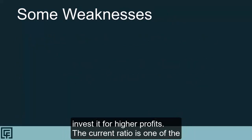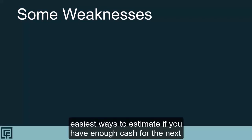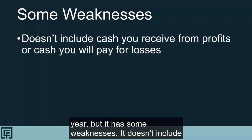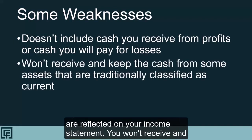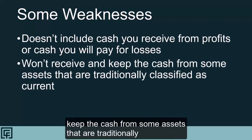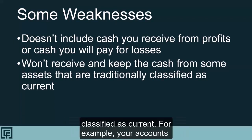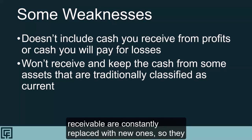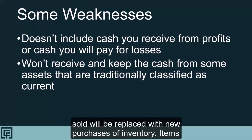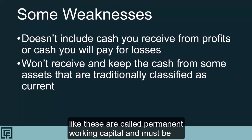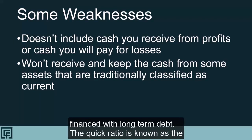The current ratio is one of the easiest ways to estimate if you have enough cash for the next year, but it has some weaknesses. It doesn't include cash you receive from profits or cash you will pay for losses reflected on your income statement. You won't receive and keep the cash from some assets that are traditionally classified as current. For example, your accounts receivable are constantly replaced with new ones, so they don't provide as much cash as you may think. Similarly, inventory sold will be replaced with new purchases. Items like these are called permanent working capital and must be financed with long-term debt.